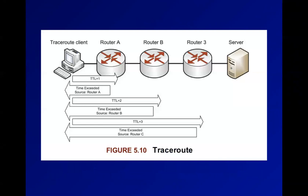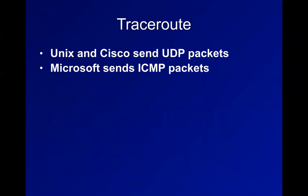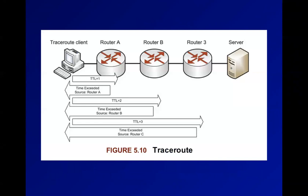Traceroute uses ICMP on Windows, but on Linux it uses UDP or TCP by default. Traceroute sends packets with a small time-to-live so they get discarded after a couple of hops, and the ICMP packet-discarded reply comes back so you can trace the route. But more and more operations block ICMP at firewalls, so traceroute is becoming less useful - more and more hops show just stars.